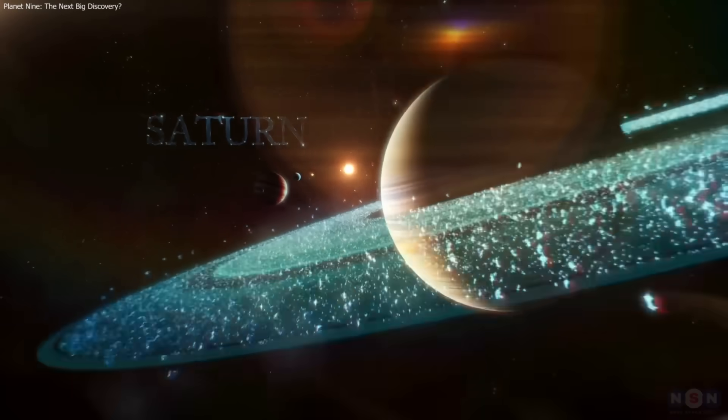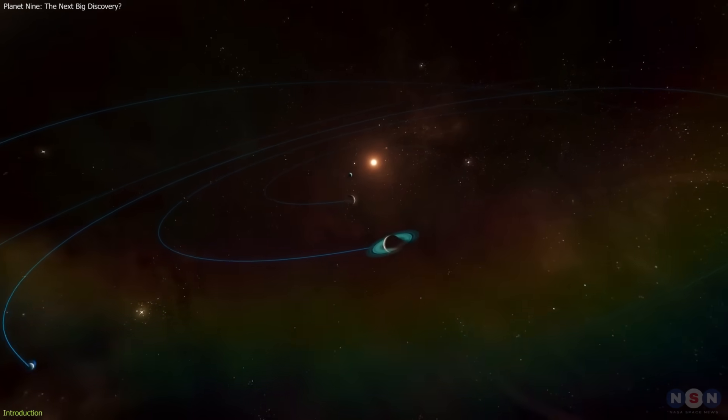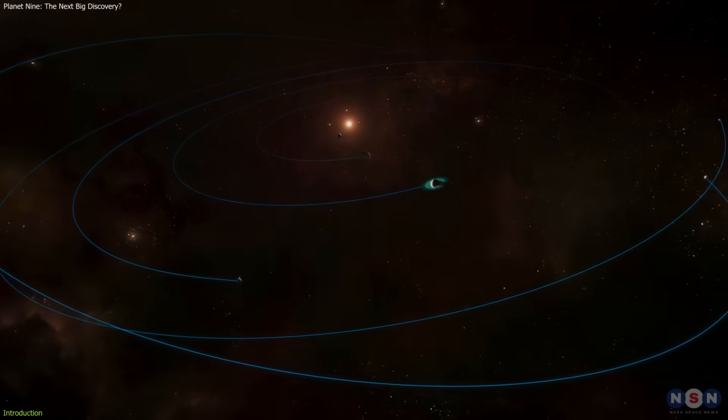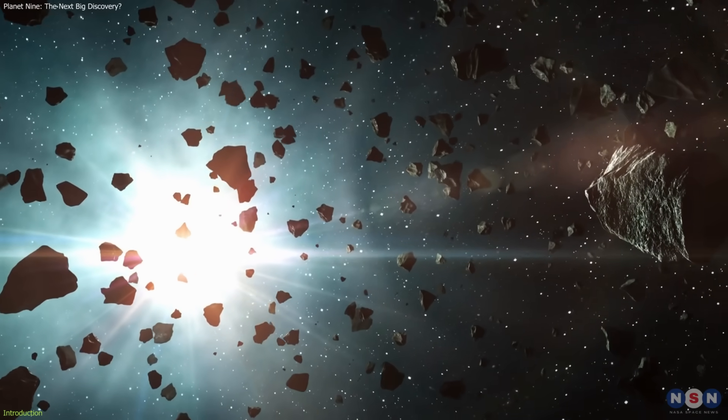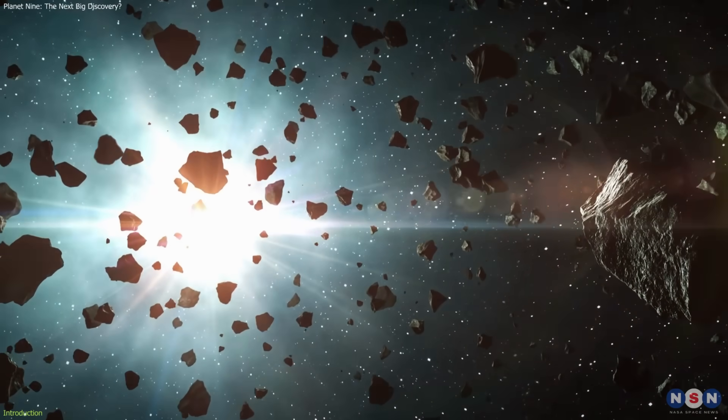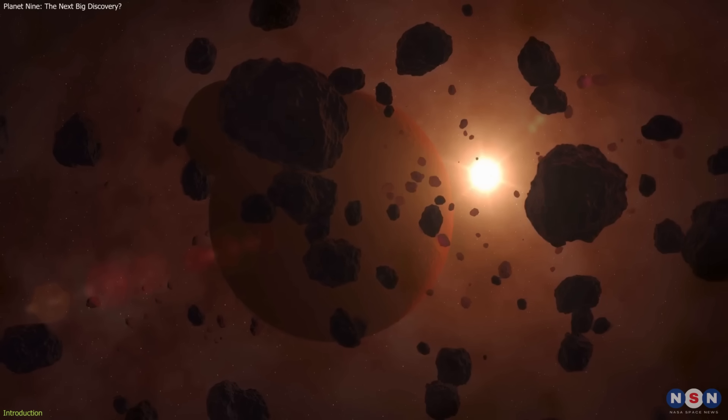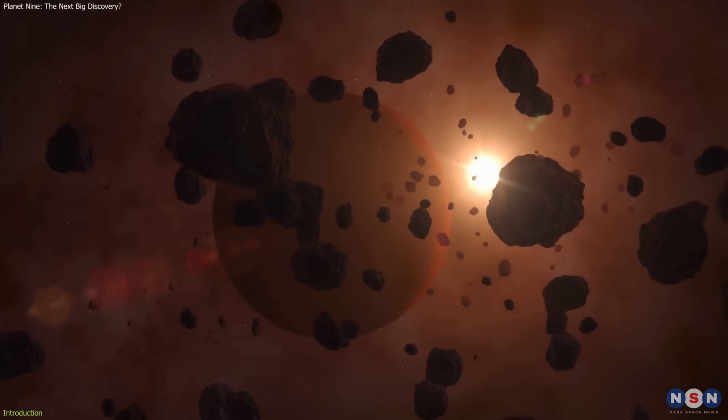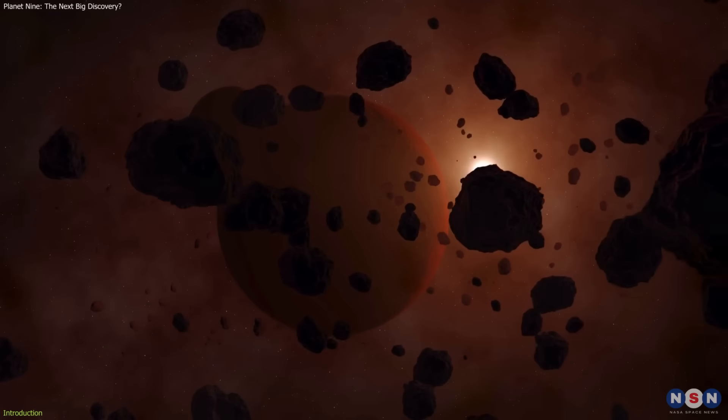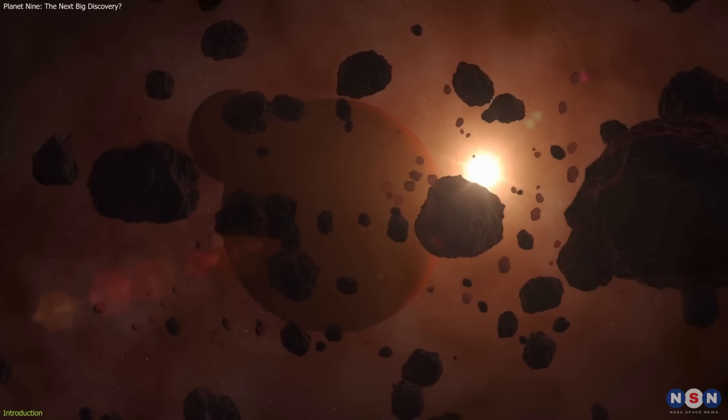Something strange is happening at the edge of our solar system. Distant icy worlds are drifting in ways that defy explanation. Astronomers believe the answer might be a hidden giant, an unseen Planet 9 lurking far beyond Neptune.